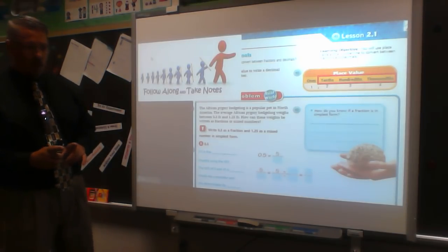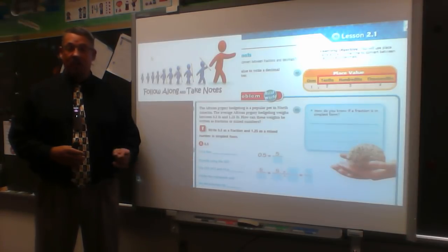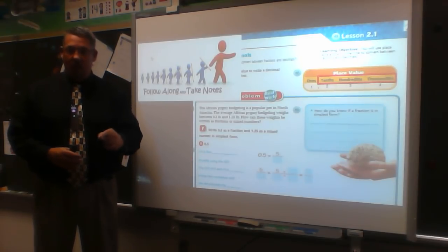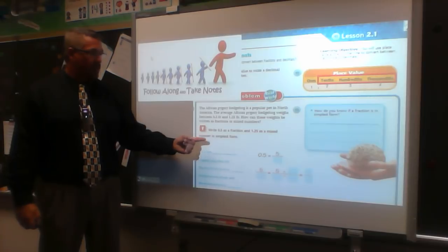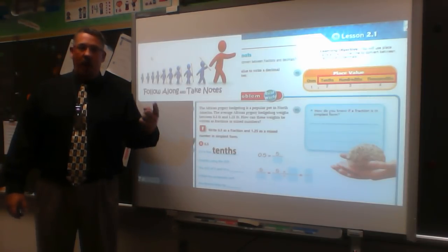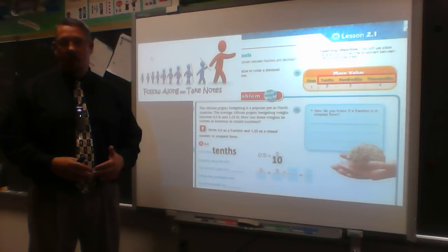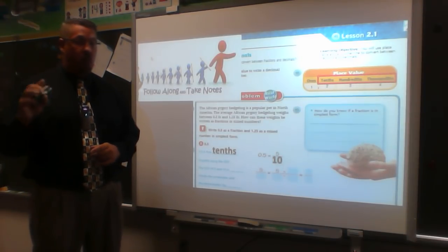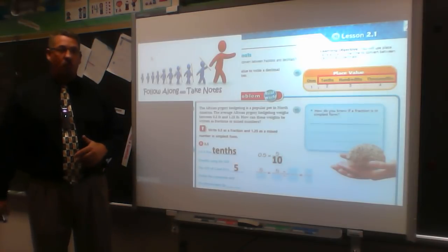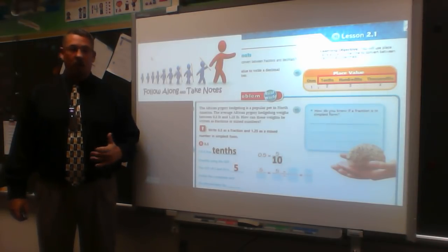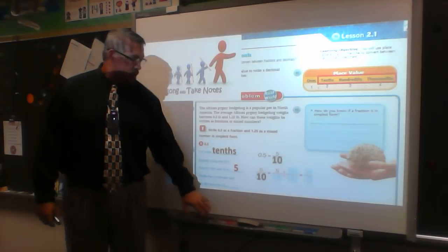If I know my decimal correctly — five tenths, because the five is in the tenths position — then I know exactly how to write it as a fraction: five over ten. But in mathematics, I always have to reduce my fractions unless told otherwise. Reducing means dividing the numerator and denominator by the same number to make a smaller but equivalent fraction — the value stays the same, the numbers just look different.